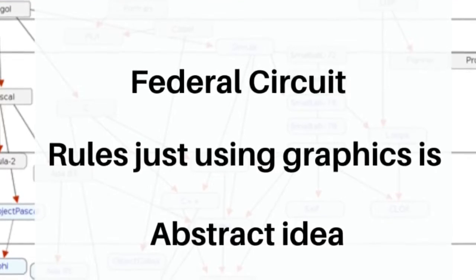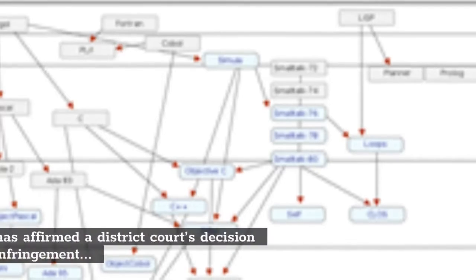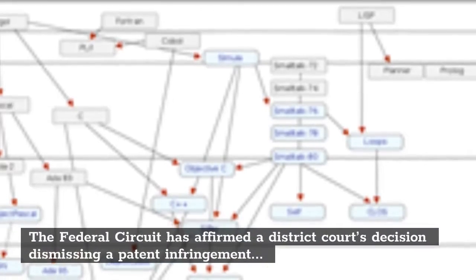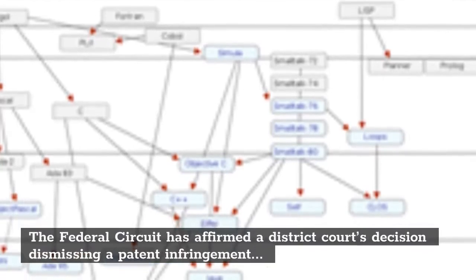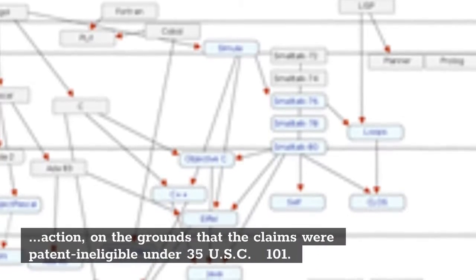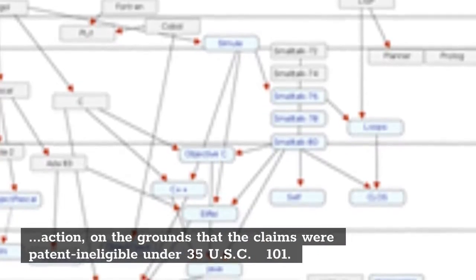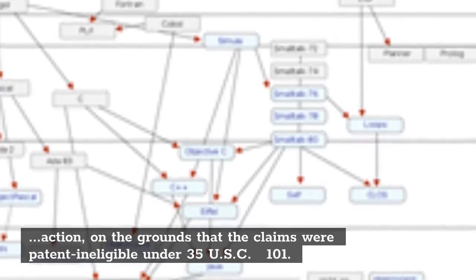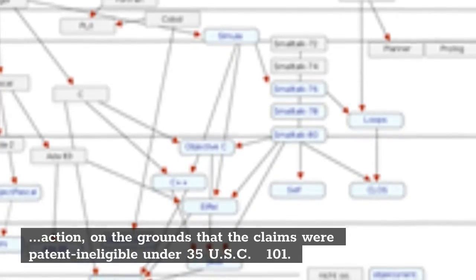The Latest on Eon Law. The Federal Circuit has affirmed the District Court's decision dismissing a patent infringement action on the grounds that the claims were patent ineligible under 35 U.S.C. Section 101.